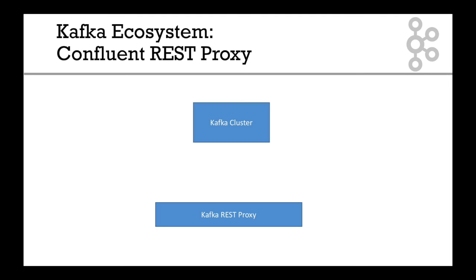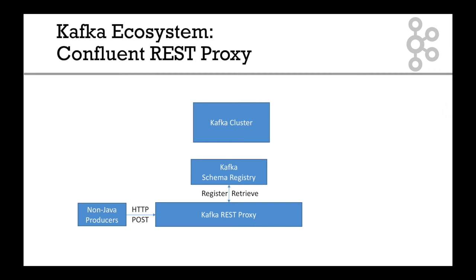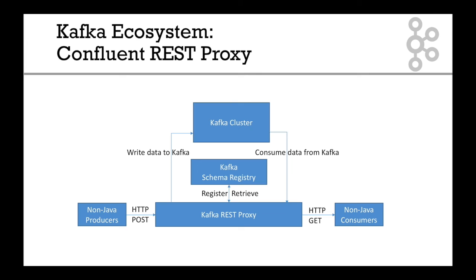For the REST proxy, how does it work? We have Kafka and we have a REST proxy. The REST proxy actually also talks to the schema registry to register and retrieve schemas on the go. We have our non-Java producers, which will send HTTP POST requests to the Kafka REST proxy, and the Kafka REST proxy will go ahead, register the schema, and write the data to Kafka. For the non-Java consumers, they will do HTTP GETs on the REST proxy, and the REST proxy will consume data from Kafka and forward it to them, and it will also retrieve the schema from the schema registry.